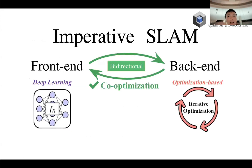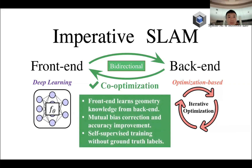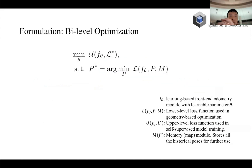So the idea is like this. We designed the imperative SLAM framework. We not only have the one-way connection, but we also send feedback from the back end to the front end — that means we back-propagate the pose-graph errors to the front end, so that the front end can learn geometry knowledge from the back end. This will result in mutual bias correction, accuracy improvement, and self-supervised training without any ground-truth label. To do this, we formally formulate the entire SLAM system as a bi-level optimization.